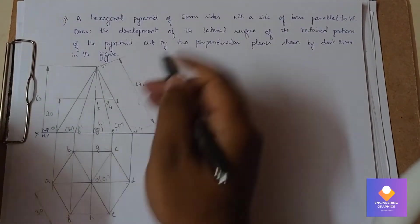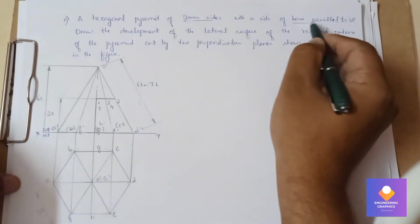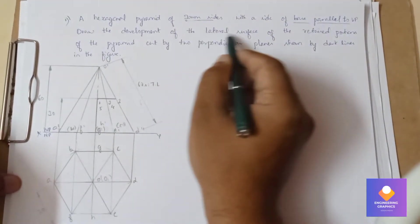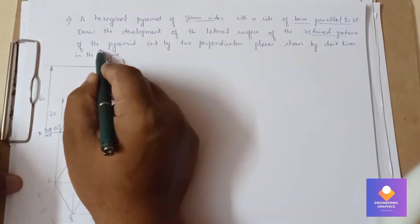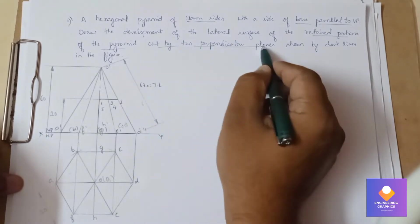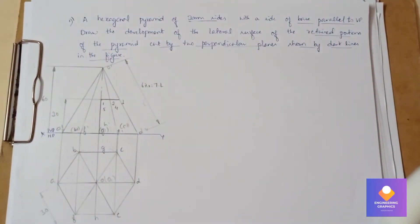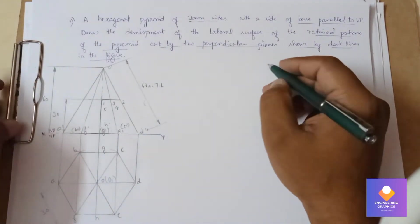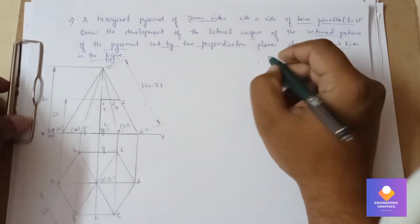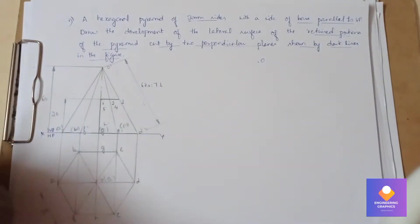A hexagonal pyramid of 30mm sides with a set of base parallel to VP. Draw the development of lateral surface of the retained position of the cut by two perpendicular planes as shown in the figure. From the figure, we take a reference point with respect to the true length.